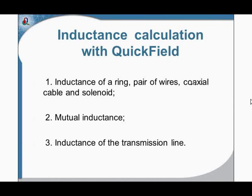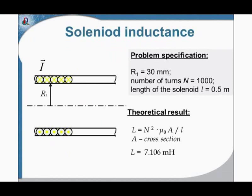We have finished with simple examples and now move to the solenoid inductance calculation. This is my solenoid — you can see the dimensions on the screen. The number of turns is 1000 and the length of the solenoid is half a meter. The inductance of the solenoid can be calculated by the well-known formula, and the inductance of my solenoid is 7.106 milli-Henry. This formula does not take into account the side effects that occur at the beginning and the end of the solenoid. Let's simulate this case in QuickField.